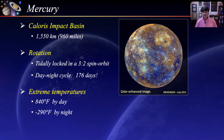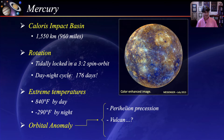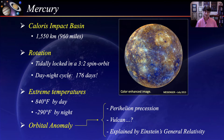Mercury's orbit doesn't exactly follow Newtonian classical mechanics. Specifically, Mercury's perihelion — its closest point to the sun — precesses around the sun in a manner that deviates from classical mechanics. This was first noticed in the mid-19th century by the French mathematician Le Verrier, who proposed the existence of a small planet called Vulcan orbiting between Mercury and the sun. Unfortunately, the planet was never found. It was not until the early 20th century that the effect was explained by Einstein's general theory of relativity.